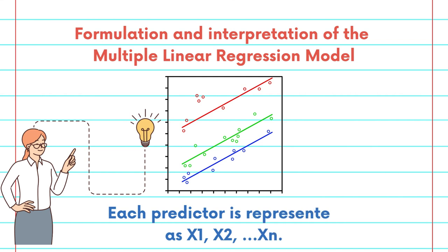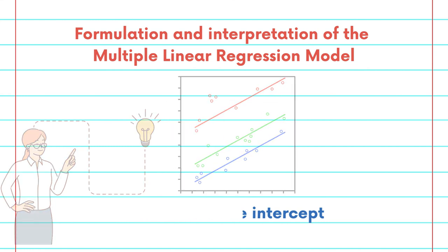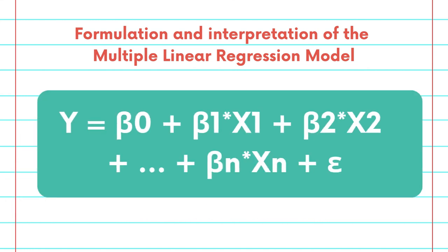For each one of the predictors we represent them as x1, x2 to xn, and for each one x we will have a coefficient for them. Together with the beta 0 we will formulate it as the multiple linear regression model.